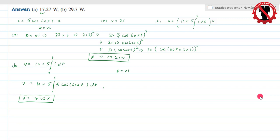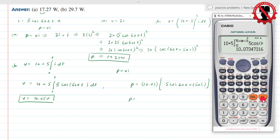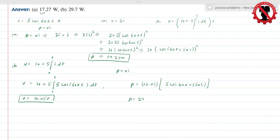Now I have multiplied this with current. So my value will be 10.05, this is V, and current value is 5 cos of 60 pi, and t value is 5 ms. So this will give me the power. I'll solve this with calculator. This is my voltage and I'll multiply it by 5 cos of 60 pi into time 5 ms. So P is equal to 29.6 watts.